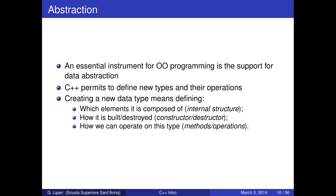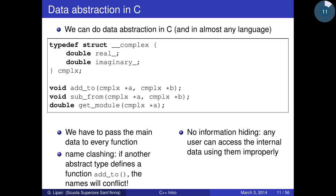Creating a new data type means defining three things: the domain — what kind of things it represents; how you build and destroy the variable; and what operations you can perform on the type. The second and third are basically the same — they are operations on the type. You can do data abstraction in C and almost any language.